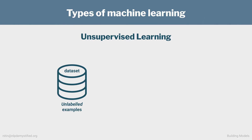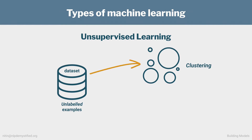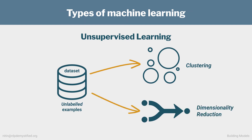Another type of learning is unsupervised learning, where the dataset is a collection of unlabeled examples. Often the goal here is to cluster the data based on shared attributes the learning algorithm discovers, or detect outliers or combine features through dimensionality reduction. We'll encounter unsupervised learning when we discuss topic modeling. There's also something closely related called self-supervised learning, which is powerful, and we'll encounter that in part two.